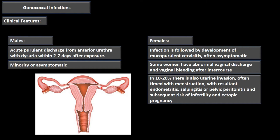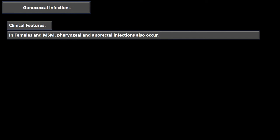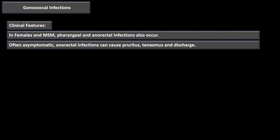For females and men who have sex with men, we also need a high index of suspicion for pharyngeal and anorectal infection, since the same type of tissue lines the pharynx and anorectal area. These are often asymptomatic; anorectal infections can cause pruritus — itching — tenesmus, and some discharge.